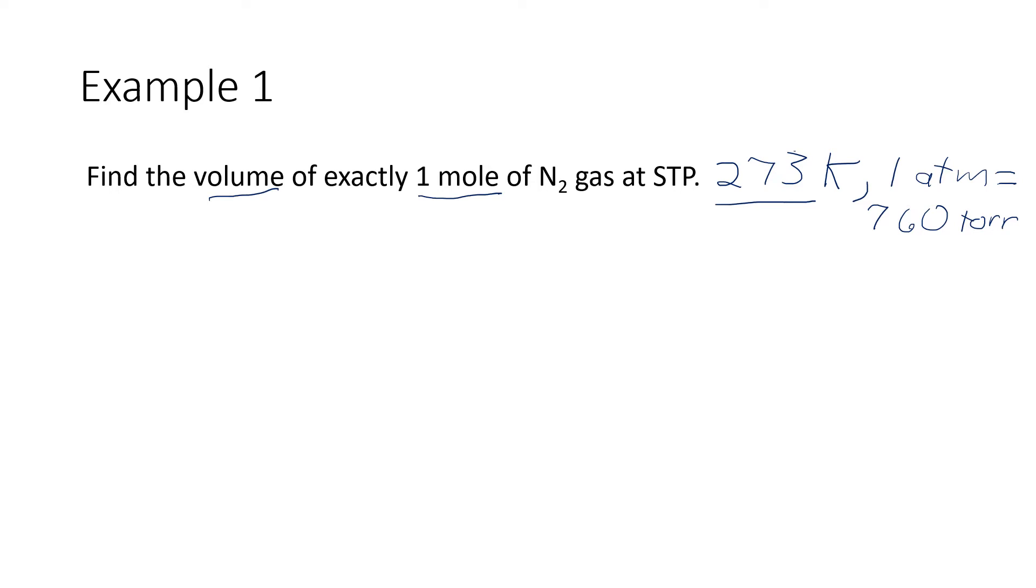And the thing that we're asked to find is volume. So if we have one number for all of these things, it's looking like the ideal gas law. The parameters in the ideal gas law are pressure, volume, the amount of the gas, the ideal gas law constant, and temperature.